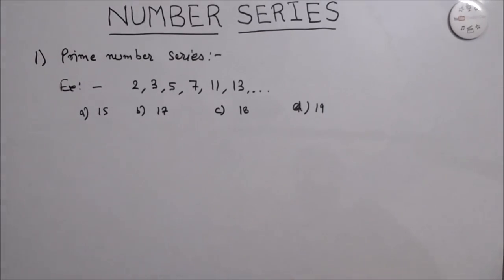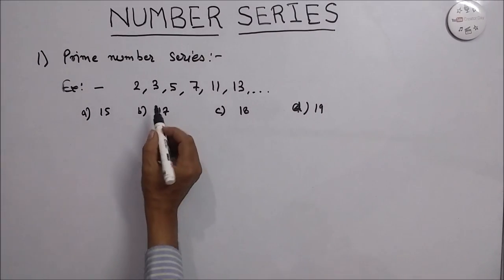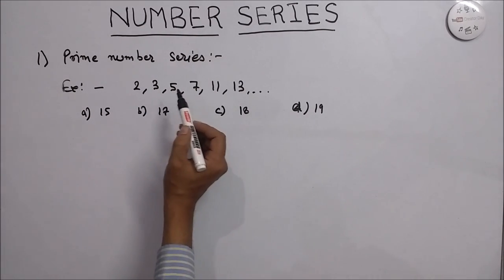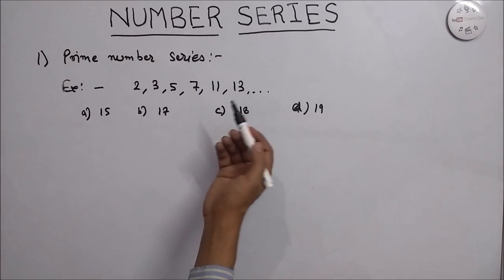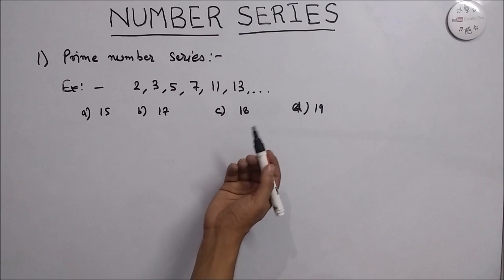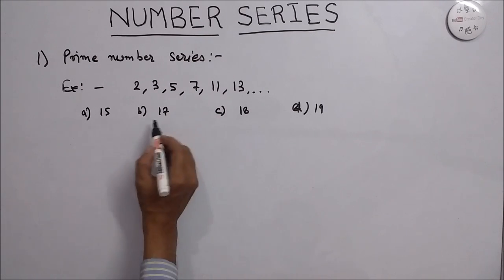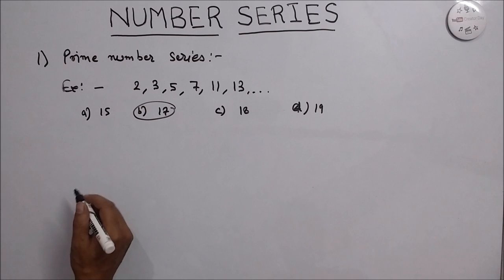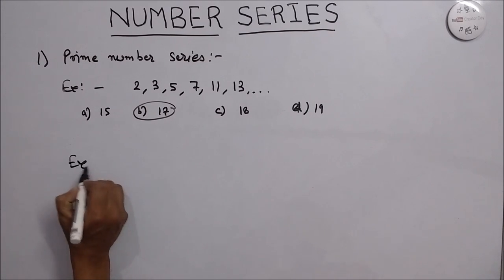Looking at the solution, we can see directly that these are all prime numbers: 2, 3, 5, 7, 11, 13. So what will be the next number? It will definitely be 17.